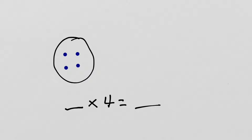Hmm. I've gotten rid of another one. So, now, I have one group of four, so it's 1 times 4, and there are 4 in all. The total, the product, is 4.